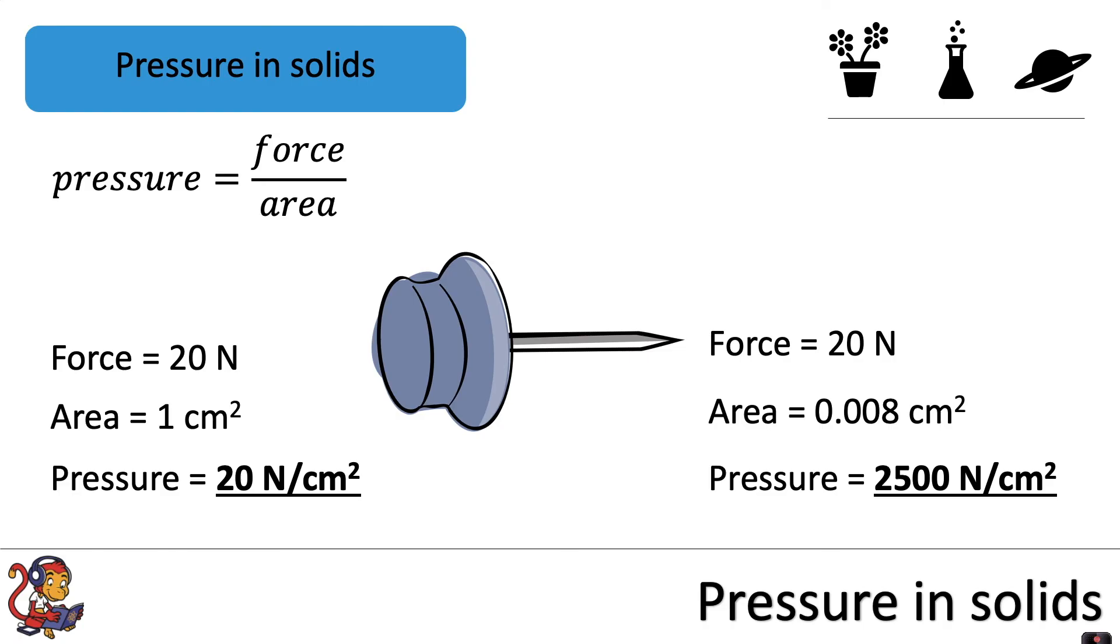So this is a clever piece of design which means the pressure on our thumb is a lot smaller and the pressure applied to the notice board is much, much greater, just by changing the area.